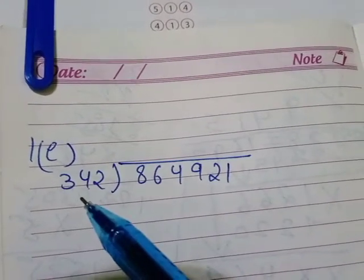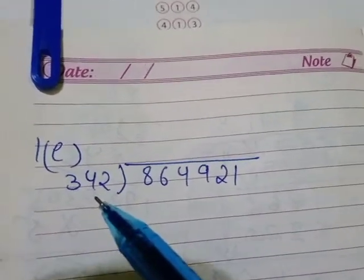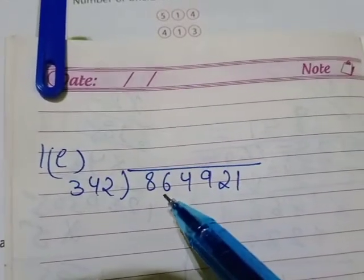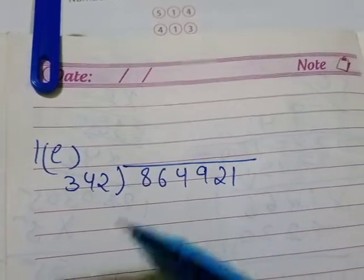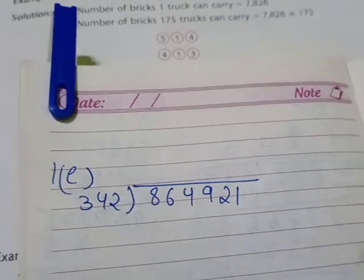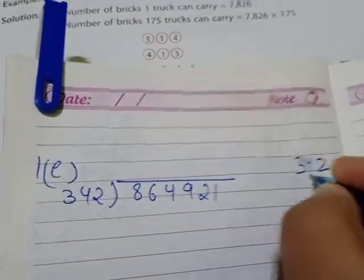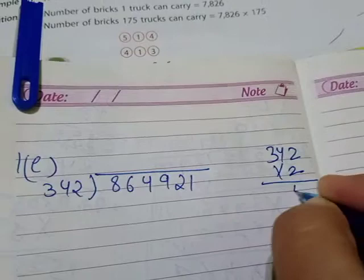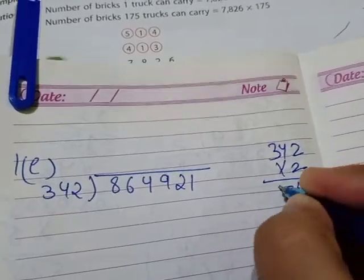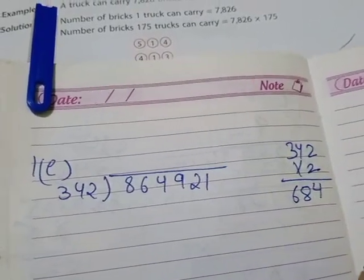So we will try here 342 into 2. We will try 2: 2s are 4, 2 4s are 8, 2 3s are 6. We are reached till 684.